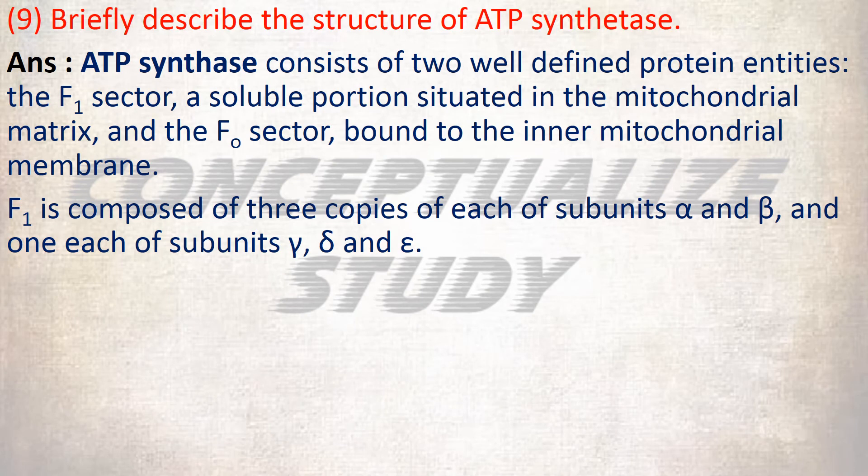Briefly describe the structure of ATP synthetase. ATP synthetase consists of two well-defined protein entities: the F1 sector, a soluble portion situated in the mitochondrial matrix, and the F0 sector, which is bound to the inner mitochondrial membrane. F1 is composed of three copies of the beta subunits.